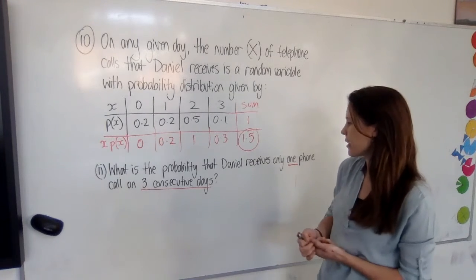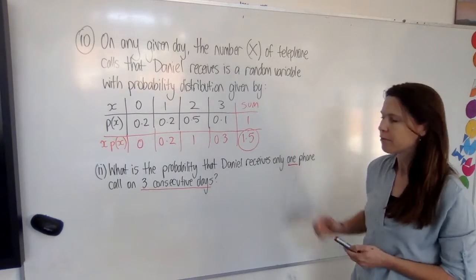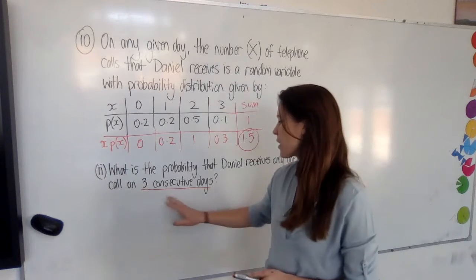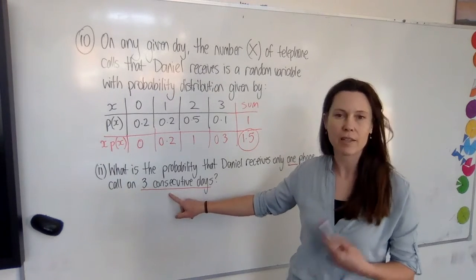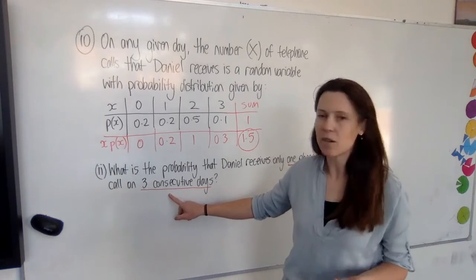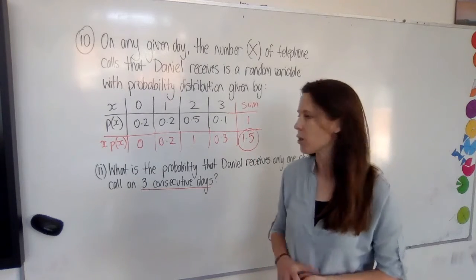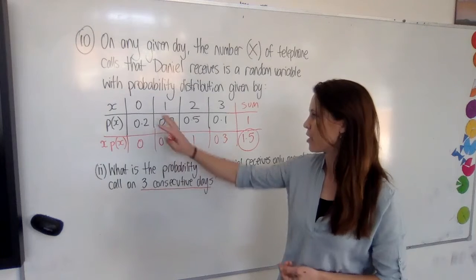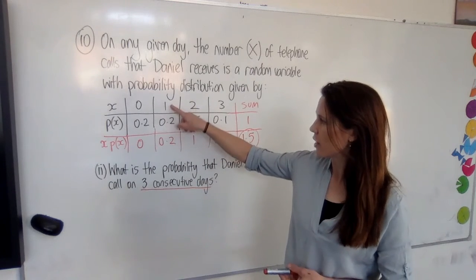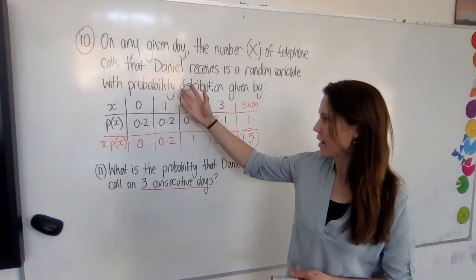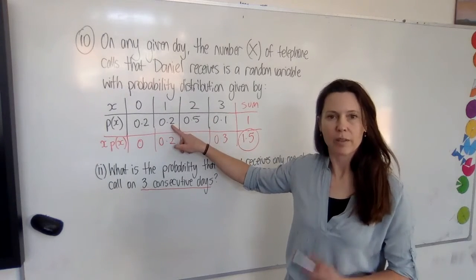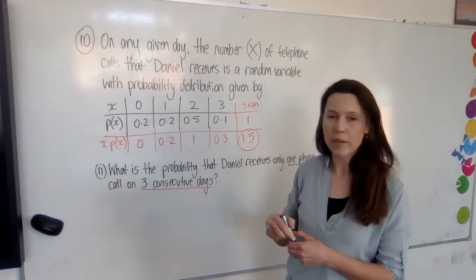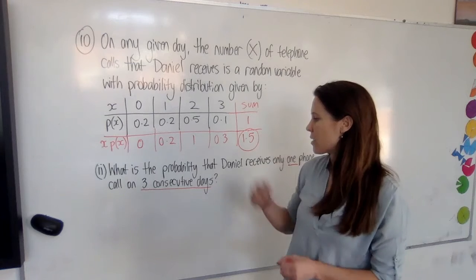Okay, part two says, what is the probability that Daniel receives only one phone call on three consecutive days? Now, consecutive days are days in a row. So this is not really a probability distribution question. It's really just a probability question, but we need to take our information from the table. Now, we can see that the chance of getting one phone call in any given day is 0.2. That's two-tenths. So two ways you might want to answer this question is to say, well,